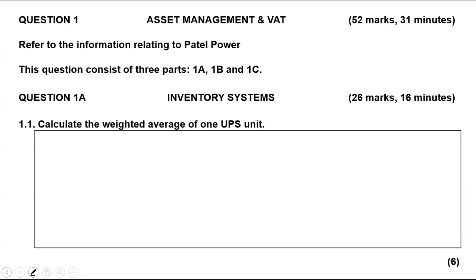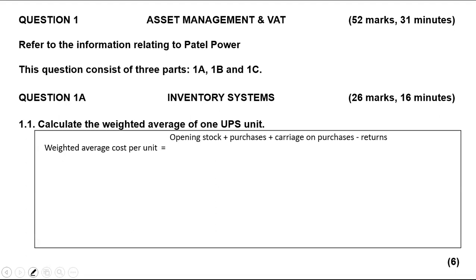Let's calculate the weighted average cost. You will take your total cost of purchases, which is the cost of opening stock plus your purchases, plus the carriage on purchases, and all less the returns. Then you divide by the number of opening stock plus purchases and less the returns. Note that carriage on purchases won't have a unit number.